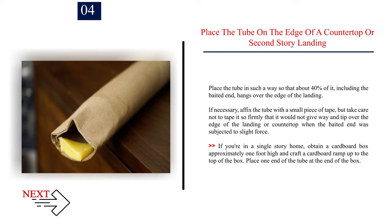Number 4: Place the tube on the edge of a countertop or second-story landing. Place the tube in such a way so that about 40% of it, including the baited end, hangs over the edge of the landing. If necessary, affix the tube with a small piece of tape, but take care not to tape it so firmly that it would not give way and tip over the edge when the baited end was subjected to slight force. If you're in a single-story home, obtain a cardboard box approximately one foot high and craft a cardboard ramp up to the top of the box. Place one end of the tube at the end of the box.